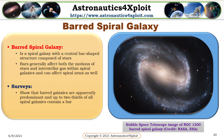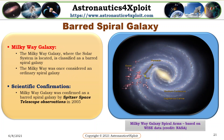A barred spiral galaxy is a spiral galaxy with a central bar-shaped structure composed of stars. Bars generally affect both the motions of stars and interstellar gas within spiral galaxies and can affect spiral arms as well. Surveys show that barred galaxies are apparently predominant, and up to two-thirds of all spiral galaxies contain a bar. This picture shows the Hubble Space Telescope image of NGC 1300 barred spiral galaxy. The Milky Way galaxy, where the solar system is located, is classified as a barred spiral galaxy. It was once considered an ordinary spiral galaxy, and was confirmed as a barred spiral galaxy by Spitzer Space Telescope observations in 2005. This picture shows Milky Way galaxy's spiral arms based on WISE data.